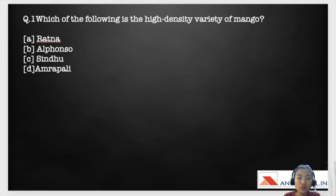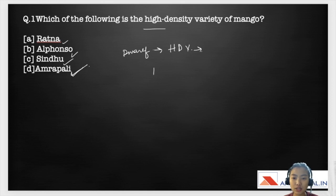Starting off with the first question, which of the following is the high-density variety of mango? The options are Radna, Alfonso, Sindhu and Amrapali. So the correct answer for this is Amrapali. It's a dwarf variety and a high-density variety as well of mango and it's a cross between Dasheri and Neelum.